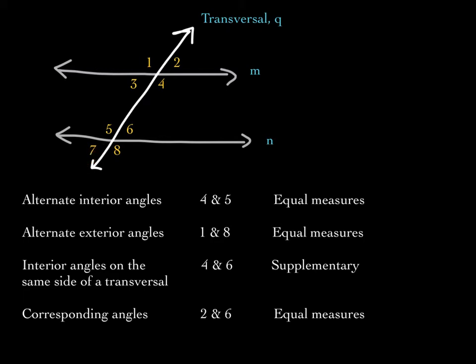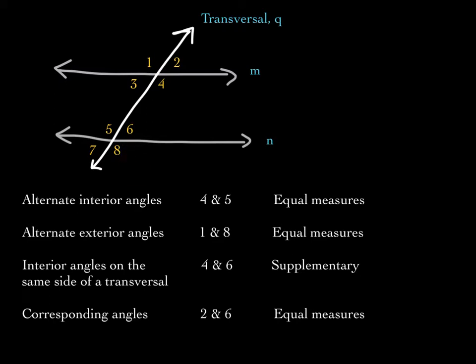Interior angles on the same side of a transversal — that would be four and six. They are interior angles on the same side of the transversal. Now, they are not equal; they are supplementary, meaning they sum to 180 degrees. The same is the case for angles three and five.